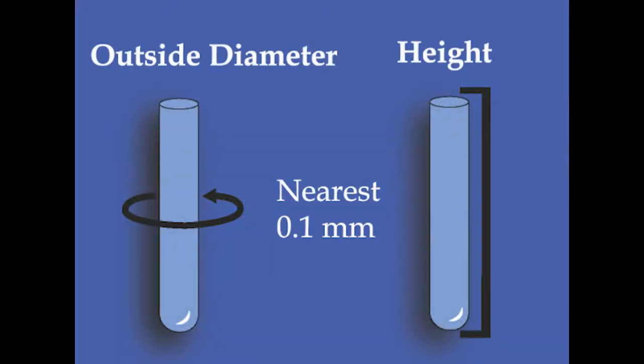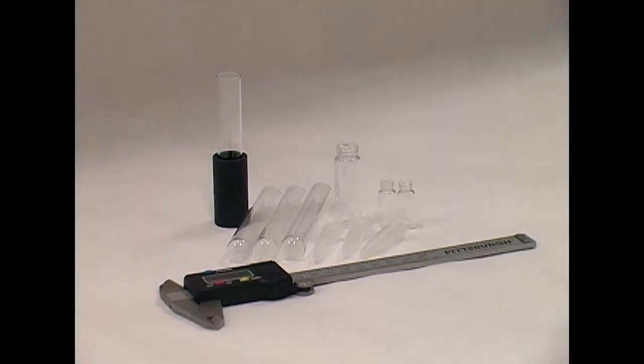When placing an order for a microvap or multivap, we will need to know the outside diameter to the nearest 0.1mm and height of your test tubes. We recommend using digital calipers to generate these measurements.